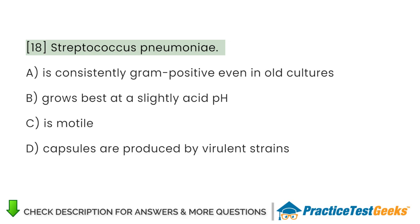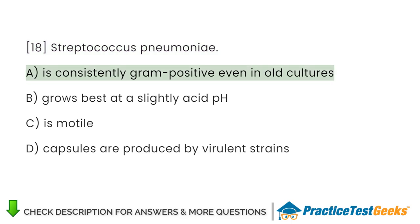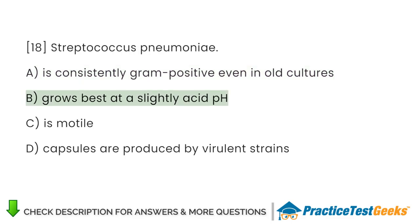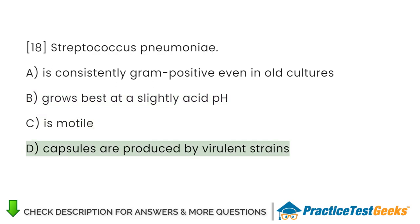Streptococcus pneumoniae: A. Is consistently gram-positive even in old cultures. B. Grows best at a slightly acid pH. C. Is motile. D. Capsules are produced by virulent strains.